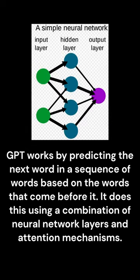GPT works by predicting the next word in a sequence of words based on the words that come before it. It does this using a combination of neural network layers and attention mechanisms.